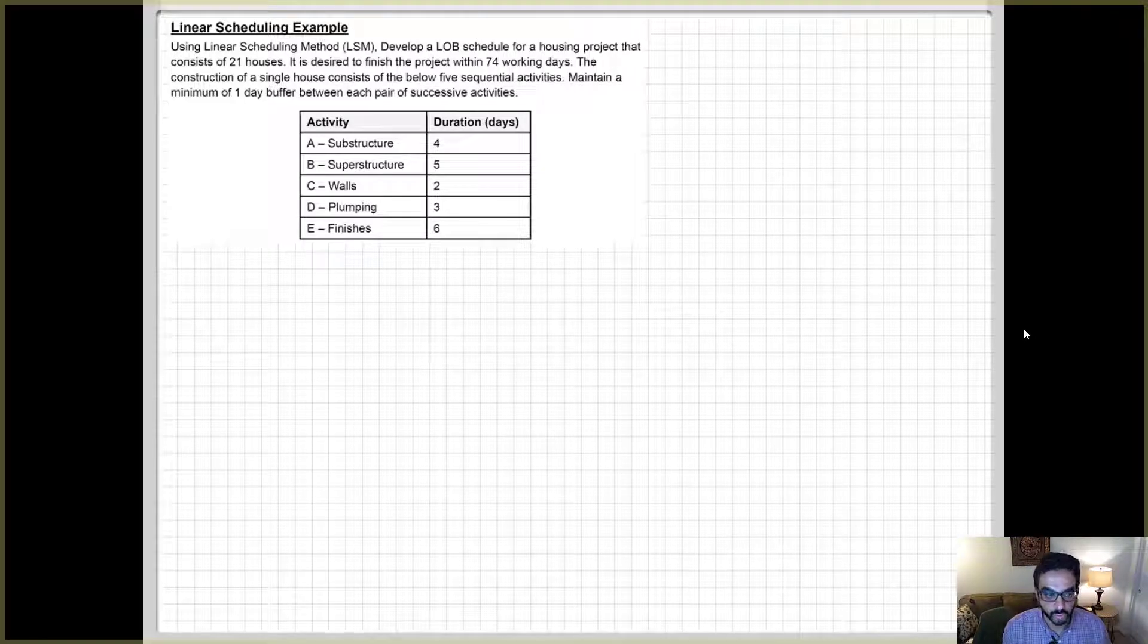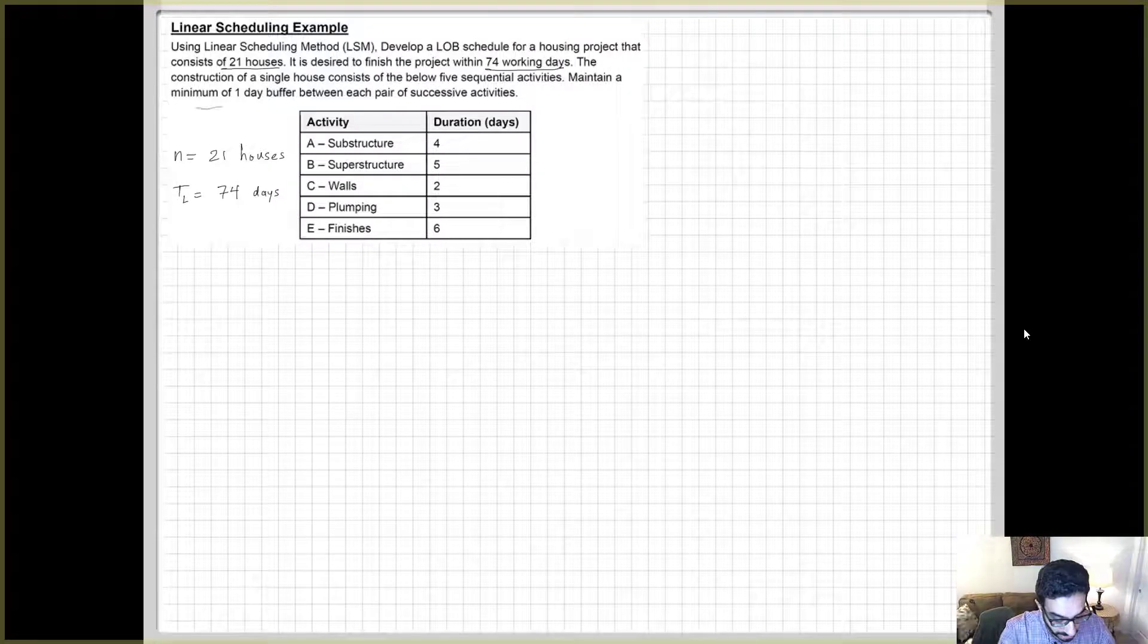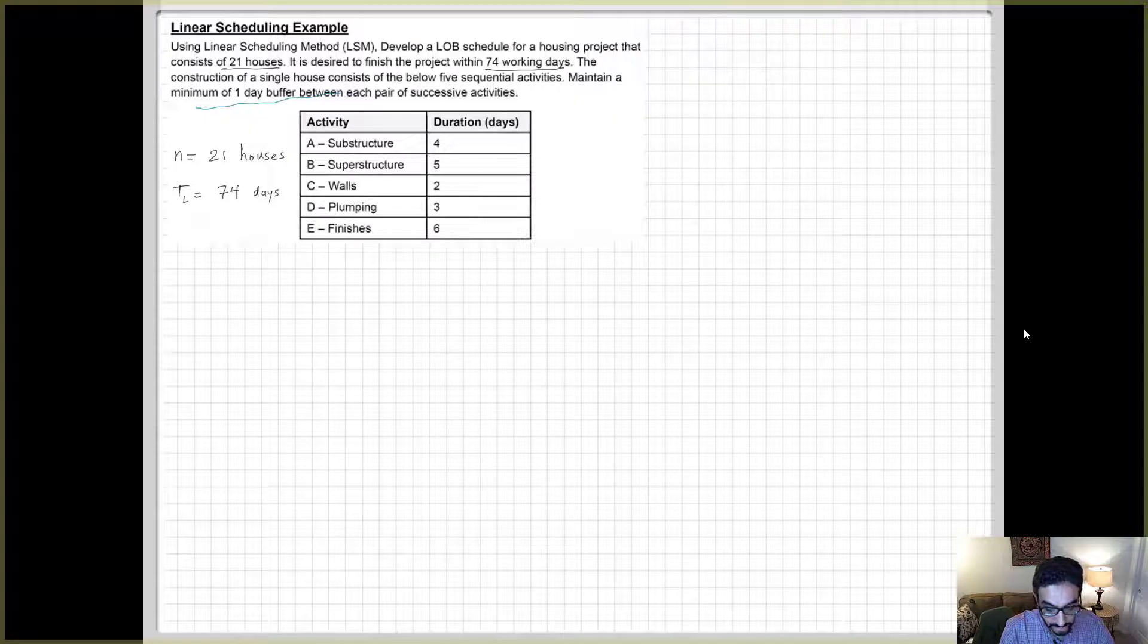Hello everyone. This video will go through an example of linear scheduling for projects. We have a housing project that consists of 21 houses, so our N, the number of units, is 21 houses, and we need to finish them by 74 working days. The table shows the repetitive five activities that we have in each unit or in each house, and there is a minimum of one day buffer between each of these activities. So total will be four buffers.